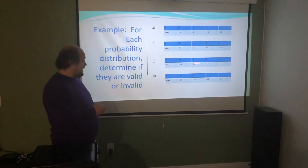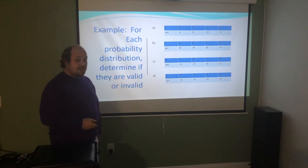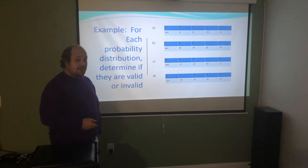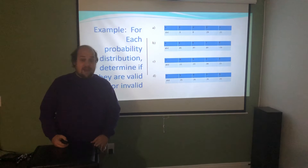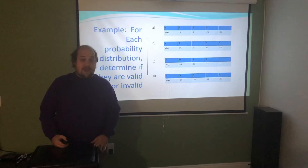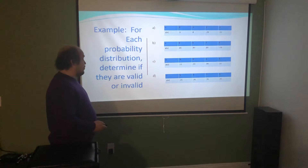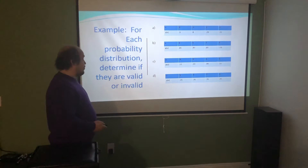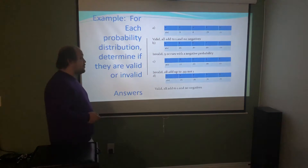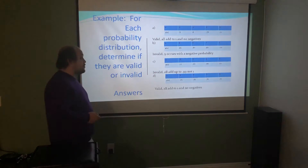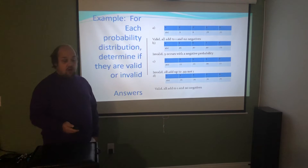A caution: if probabilities are given as fractions — for example, 1/9 rounded to 0.11, 1/3 rounded to 0.33, 4/9 rounded to 0.44, 1/9 rounded to 0.11 — rounding could produce a sum of 0.99 or 1.01 when the distribution is actually valid. Be careful there. That said, if decimals are given directly, assume they're unrounded and the sum must be exactly 1 for the distribution to be valid.